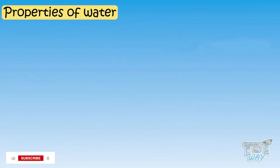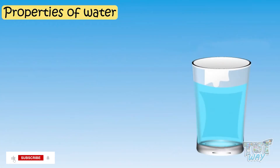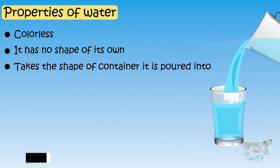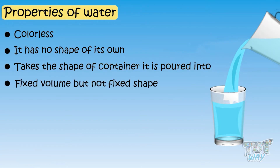Now let's learn some properties of water. Water is colorless. It has no shape of its own. It takes the shape of the container it is poured into. Water has a fixed volume, but not a fixed shape.